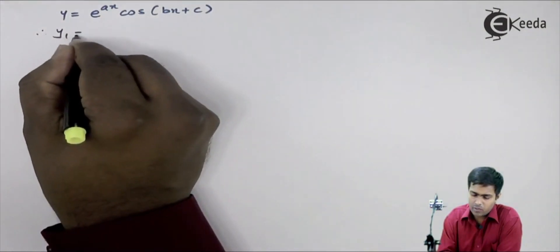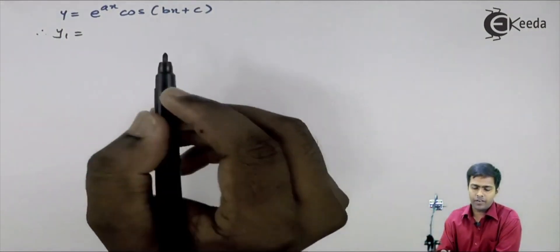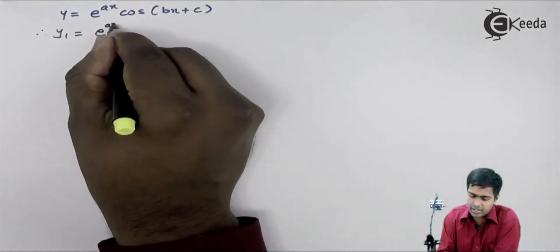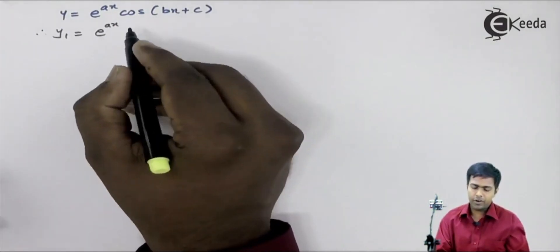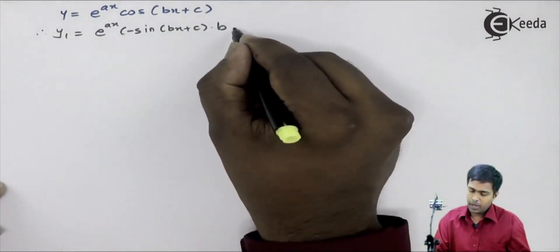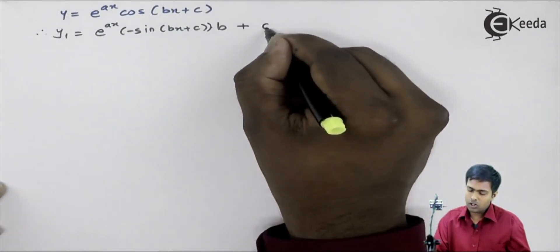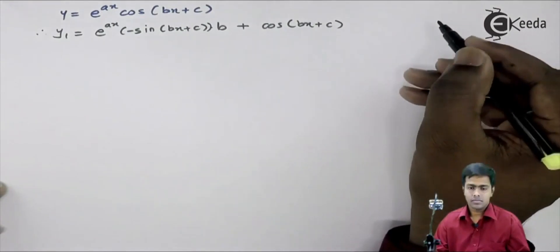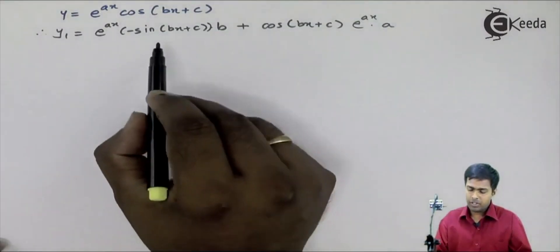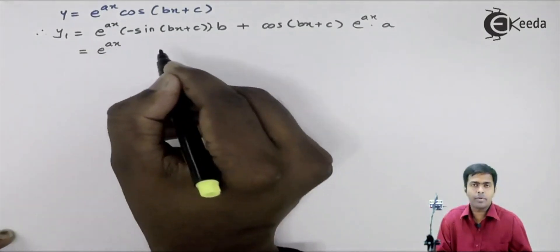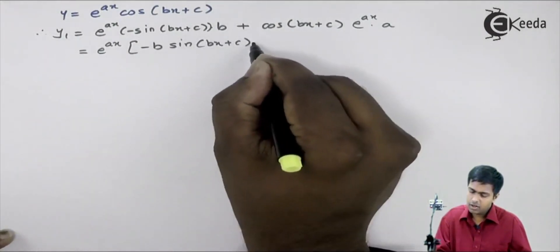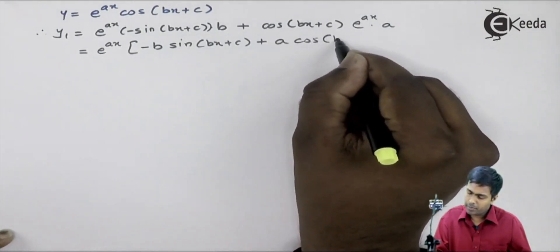The first derivative y1 we will get by applying the formula of derivative on u into v. This function is u, this is v. So I will get e raised to ax as it is, times the derivative of v — that is, derivative of cos is minus sin of bx plus c into b — plus cos of bx plus c as it is, times the derivative of e raised to ax which is e raised to ax into a. Taking e raised to ax common, in the bracket we get minus b sin of bx plus c plus a cos of bx plus c.